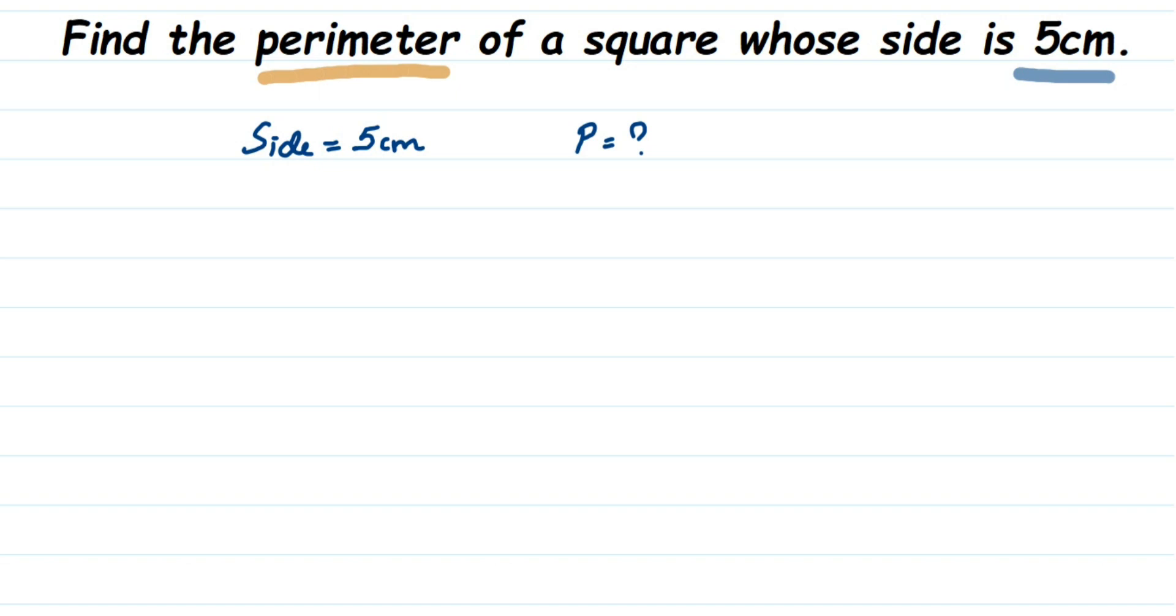Perimeter of a square equals 4 times the side. It's like you have to add the sides four times: side plus side plus side plus side. Instead of adding it four times, you're just multiplying by 4. Four times the side - they're the same. We will substitute the value here: 4 times 5.